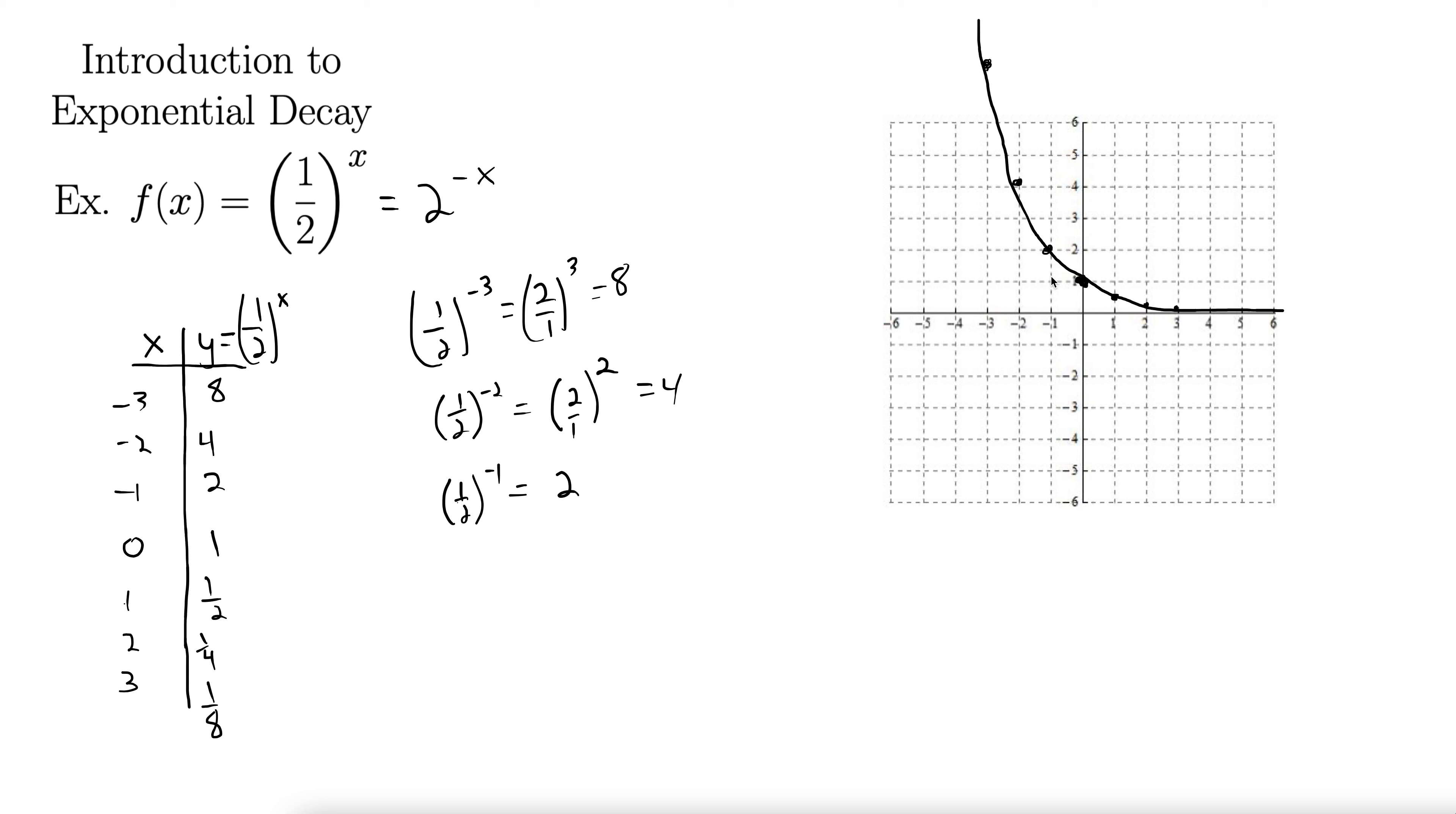So there is exponential decay. You see exponential decay a lot with, for instance, radioactivity. Radioactive decay, some radioactive substance decays at a certain rate.